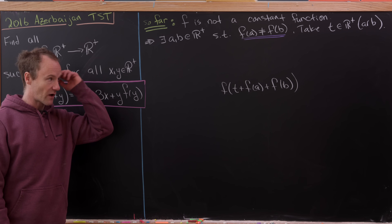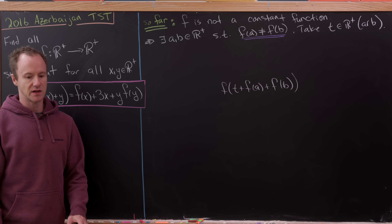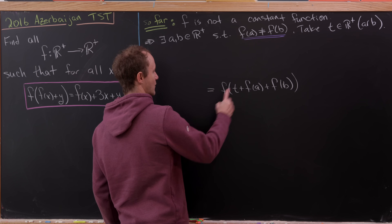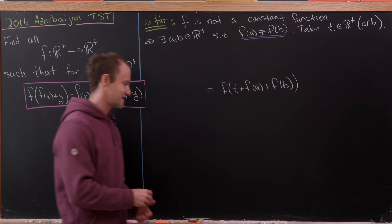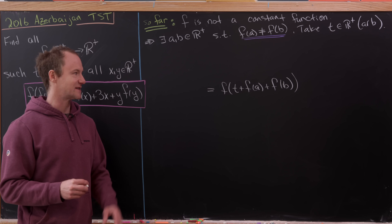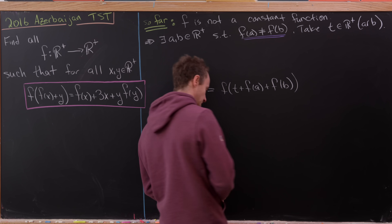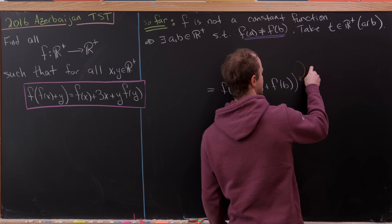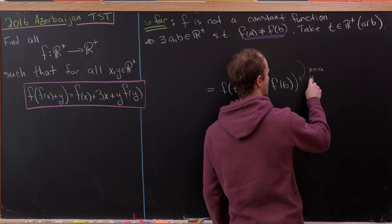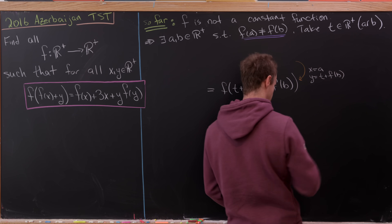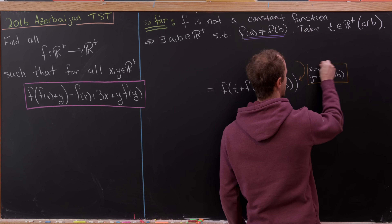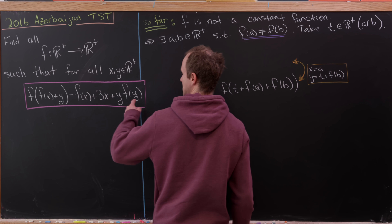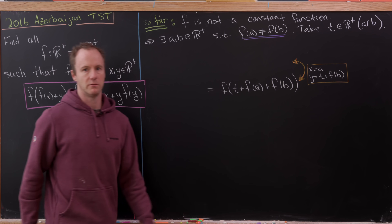We'll unravel this object using two different choices of x and y. The first way — shown by the orange arrow — is to take x = a and y = t + f(b). That choice applies our functional equation to expand f(t + f(a) + f(b)) in one direction.